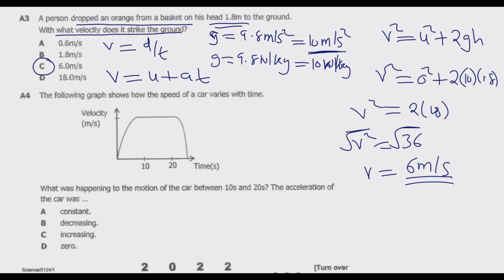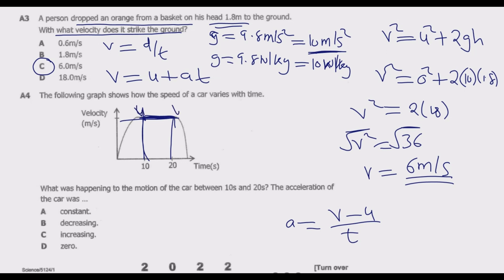Question 4: The following graph shows how the speed of a car varies with time, with velocity in m/s on the y-axis and time in seconds on the x-axis. What was the acceleration of the car between 10 and 20 seconds? Acceleration equals (final velocity − initial velocity) / time. In this interval the velocity is not changing, so the change is 0 over 10 seconds, giving 0 m/s². Answer D is correct.